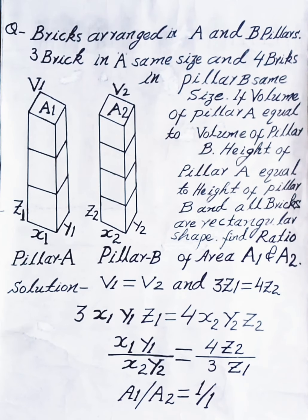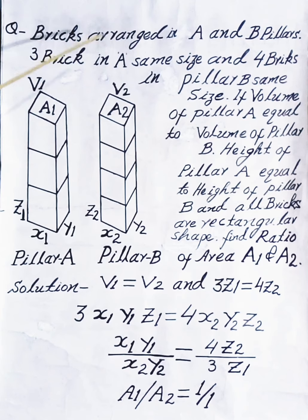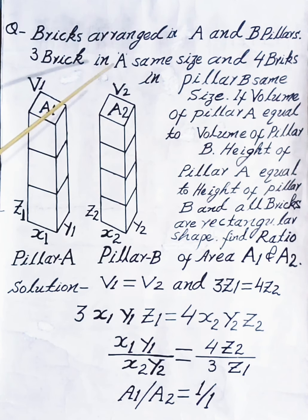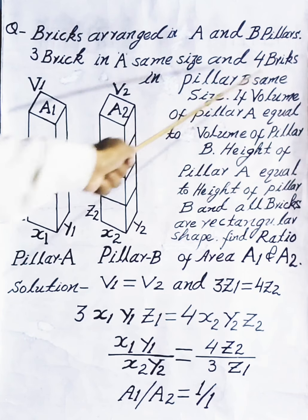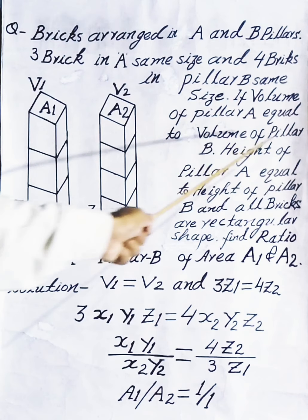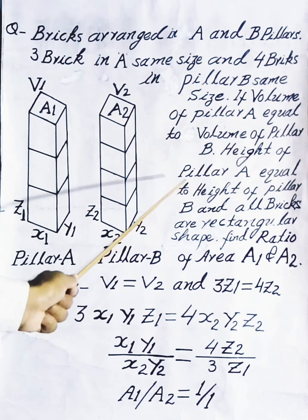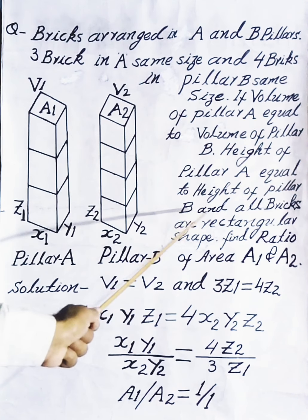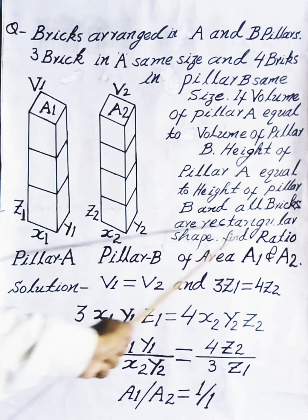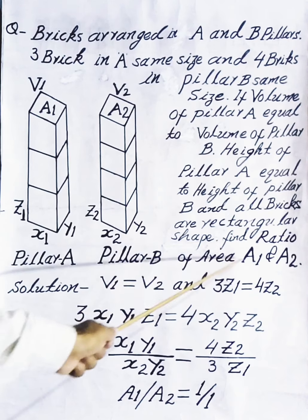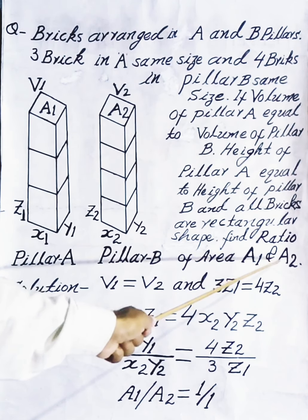General aptitude question: bricks are arranged in pillars A and B. There are three bricks in pillar A, all the same size, and four bricks in pillar B, all the same size. If the volume of pillar A equals the volume of pillar B, and the height of pillar A equals the height of pillar B, and all bricks are rectangular shaped, find the ratio of area a1 to area a2.